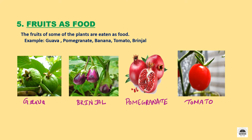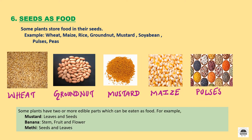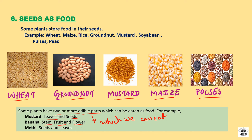Now, fruits as food. The fruits of some plants are eaten as food, like guava, brinjal, pomegranate and tomato. My favorite fruit is mango. Now, seeds as food. Some plants store food in their seeds, like wheat, groundnut, mustard, maize and pulses. Do you know some plants have two or more edible parts? Like mustard — we eat its leaves and seeds. Banana — we eat its stem, fruit and flower. And methi — we eat its seeds and leaves.